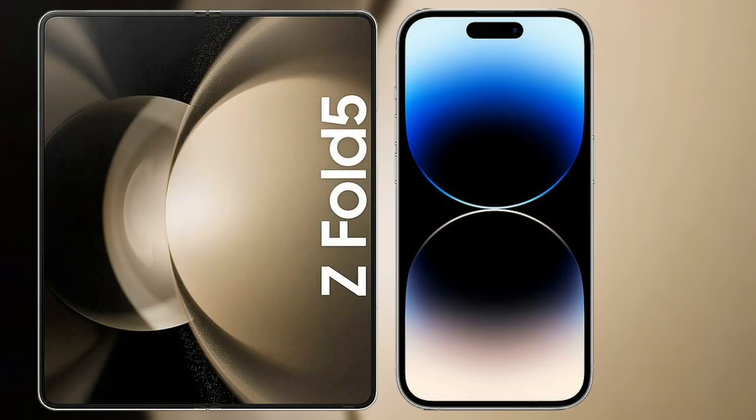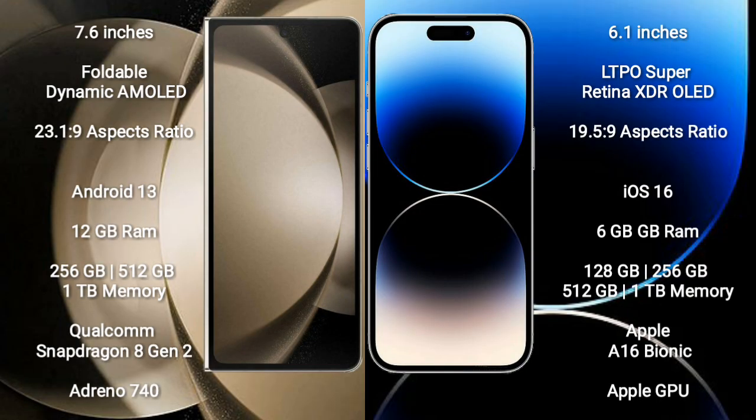I will compare the new Samsung Galaxy Z Fold 5 with iPhone 14 Pro. Samsung Galaxy Z Fold 5 comes with a 7.6-inch foldable dynamic AMOLED display with an aspect ratio of 23.1:9. iPhone 14 Pro comes with a 6.1-inch LTPO Super Retina XDR OLED display with an aspect ratio of 19.5:9.